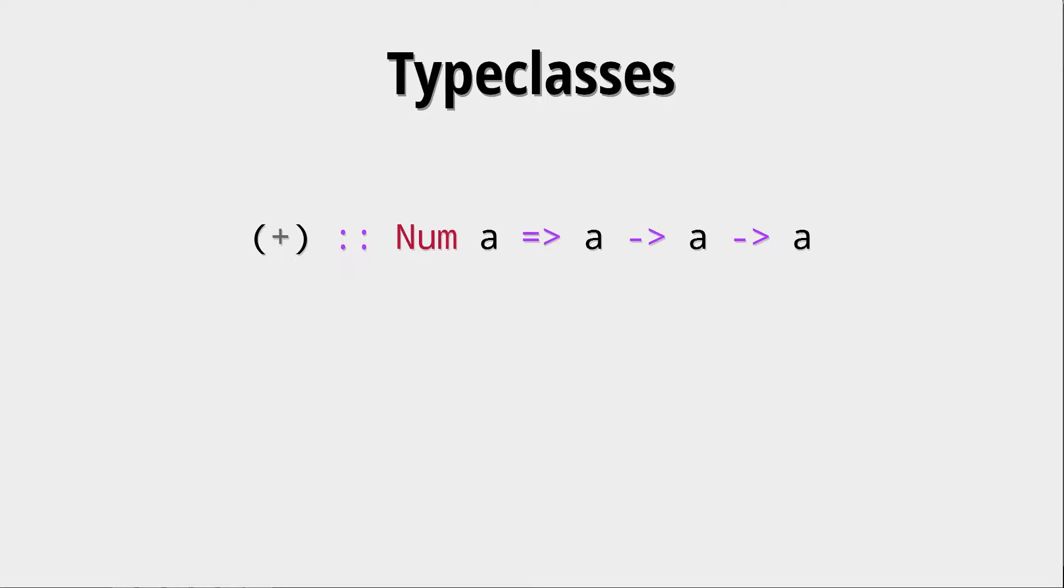So we need to constrain the type in some way. And that is done with this type constraint that we have here that is called Num a. Now, what does that tell us? Well, it tells us that this function works for any polymorphic type that has an instance of the Num type class.